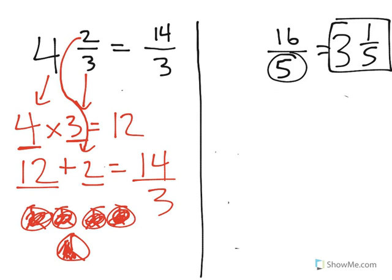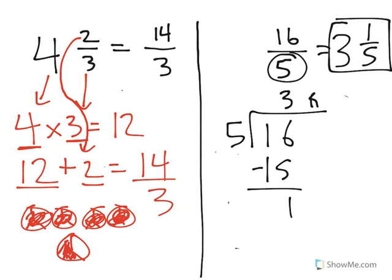16 fifths, the fraction, is the same thing as saying 16 divided by 5. When we solve that, I can see 5 fits into 16 three times, and it has a remainder of 1. Our whole number is 3, our remainder is the numerator, and our denominator remains 5.